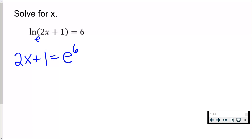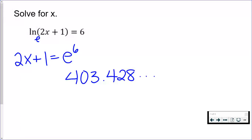Now you are going to figure out e to the sixth power. I would recommend not clearing it from your calculator. On most calculators, you're going to find the button that says e to the x and raise e to the sixth power. Hopefully you get the number 403.428. Do not clear it — keep it in your calculator.